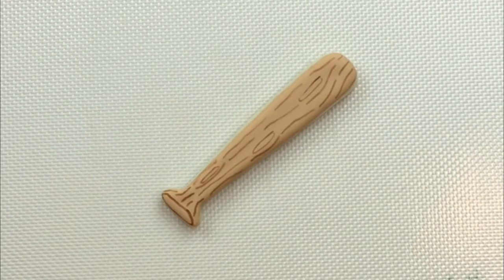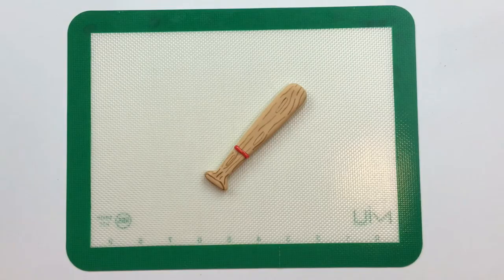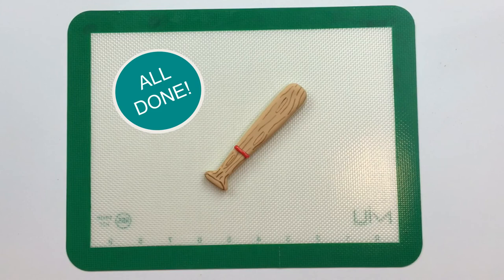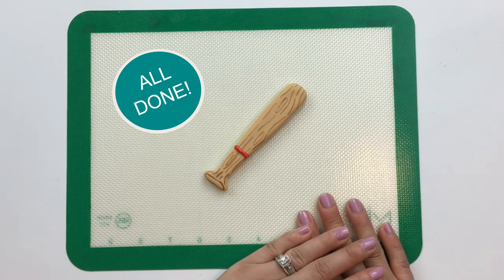Then we're going to use a little bit of piping red icing to make a couple red lines on the bat. Batter up! Our baseball bat's all done. Now let's let it dry.